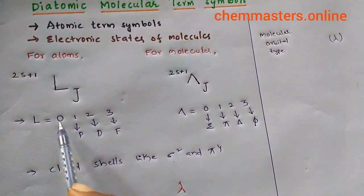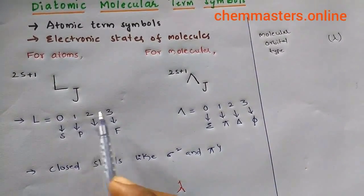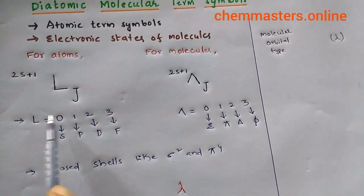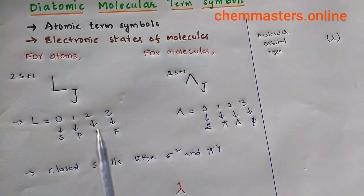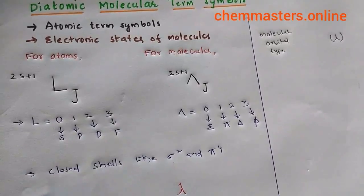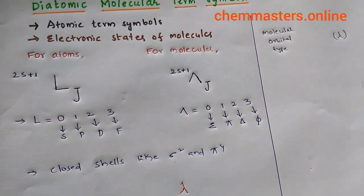If L equals 0, then that is S. If 1, that is P. If 2, that is D. If 3, that is F. We discussed about atomic term symbols and you can check it in our Chem Master YouTube channel.